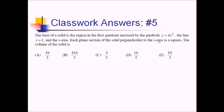For squares, the area is s squared. The base of the square — which is also the height of the square — is just the distance from the x-axis to the upper function, which is 4x squared. So that distance is 4x squared minus 0. We can write 4x squared, quantity squared, for the area. That simplifies to 16x to the fourth.